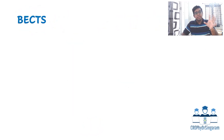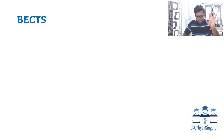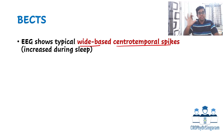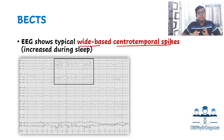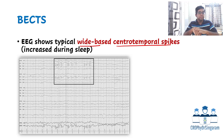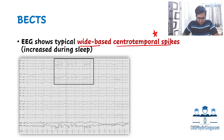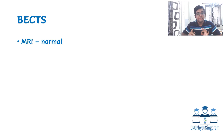Diagnosis is made with EEG, where you look for wide-based centrotemporal spikes — that is how the condition gets its name. These spikes are more observed during sleep, which aligns with the seizures occurring at night. On EEG, the spike activity is focal — not all electrodes show activity, only the affected area. MRI in this condition will typically be normal. Remember, this is a benign condition.